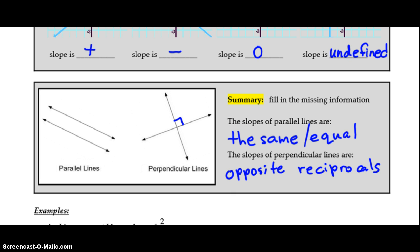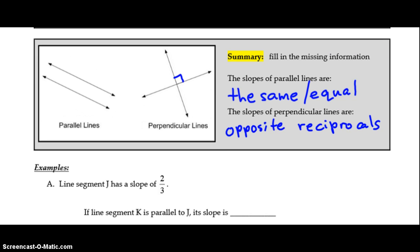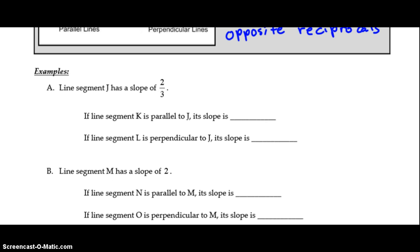We'll do the first example just to refresh your memory on in particular opposite reciprocals. So example a, line segment J has a slope of 2/3. If line segment K is parallel to J its slope is the same 2/3. If line segment L is perpendicular to J its slope would be the opposite reciprocal. When we say opposite we say change the sign. In this case it's a positive slope so opposite would mean it's a negative slope. And that word reciprocal just means to flip that fraction. So instead of 2 over 3 we now have 3 over 2. So a line segment that's perpendicular would have a slope of negative 3/2.